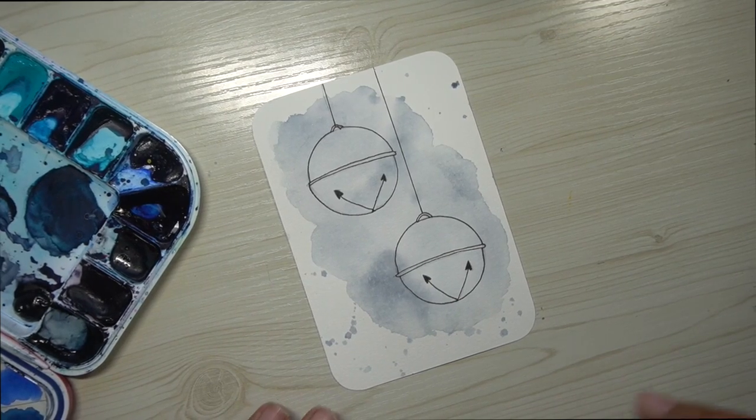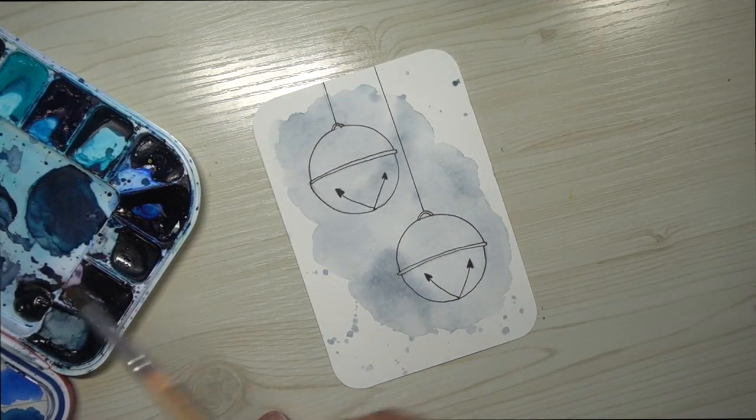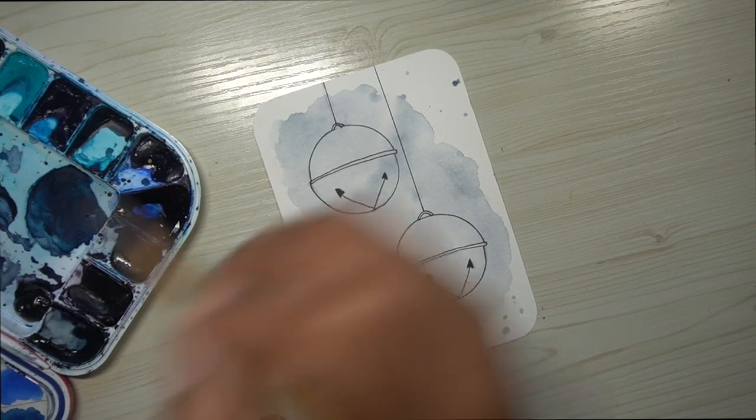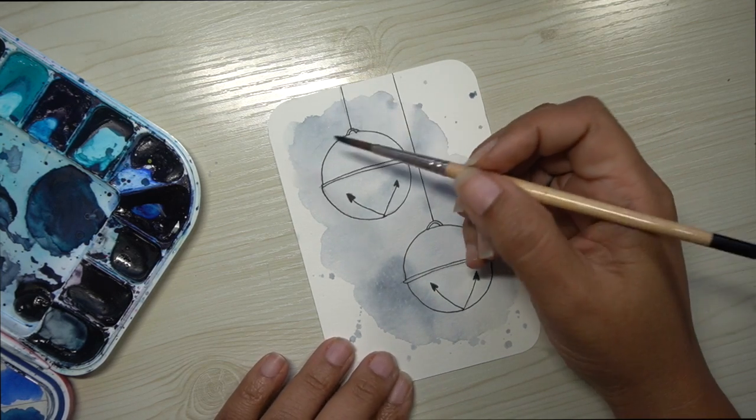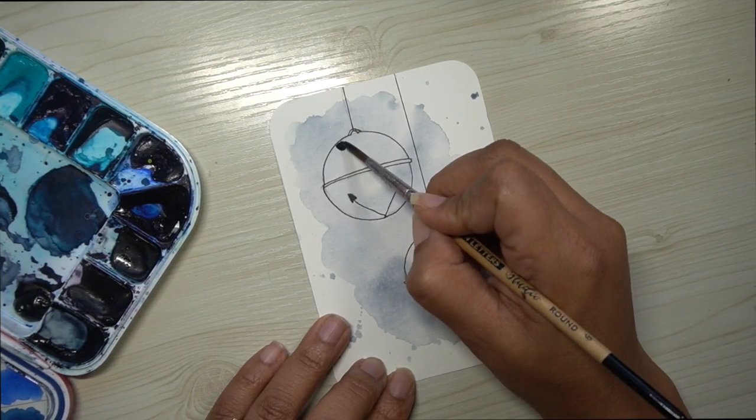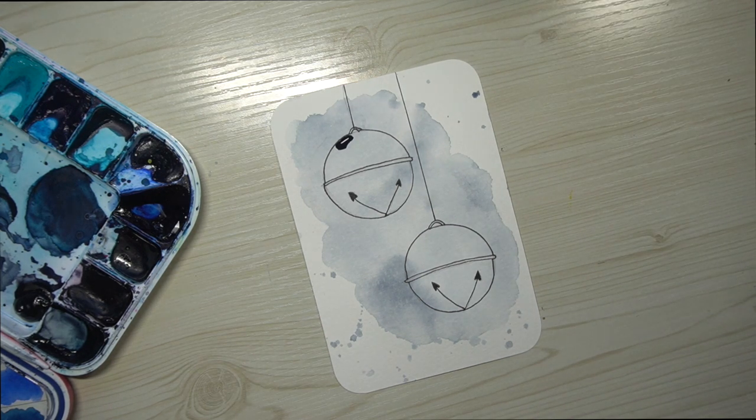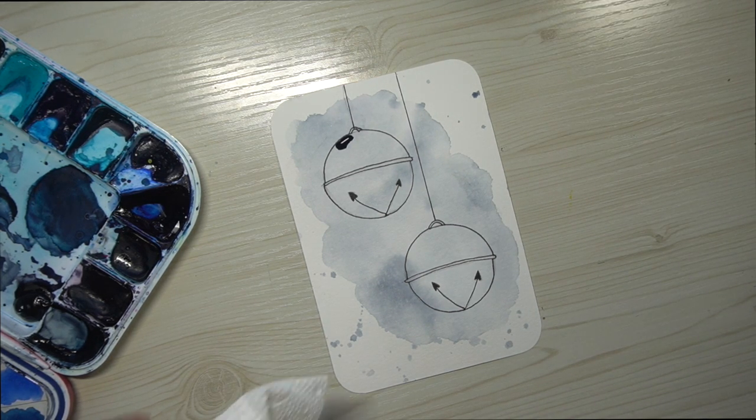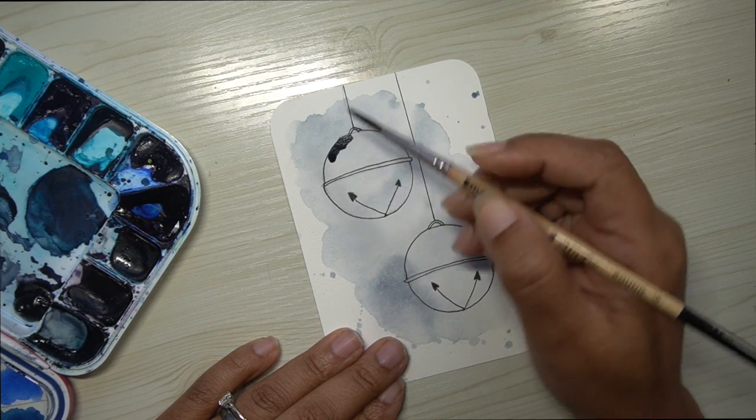Once this has completely dried, we are going to move on to painting the Jingle Bells. So I'm going to be using the very same color, Payne's gray, and I am switching to a smaller brush. This one is a size six, and you're going to notice that the darkest color, the darkest shade of this Payne's gray is going to be added to the left side of the painting.